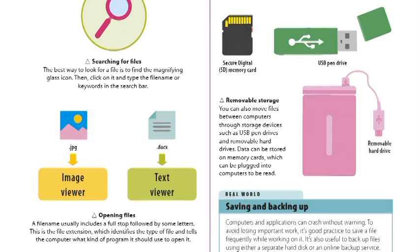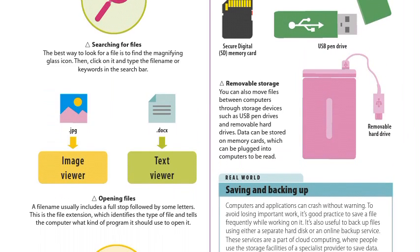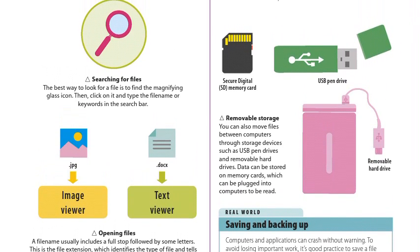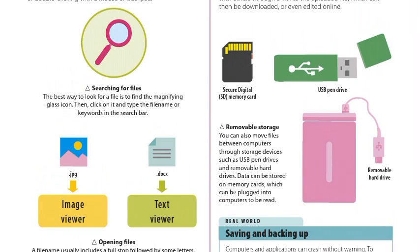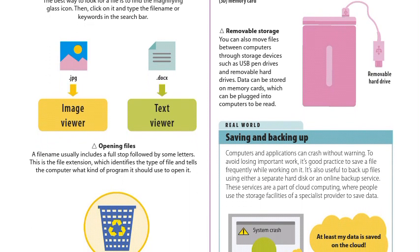The best way to look for a file is to find the magnifying glass icon, click on it, and type the file name or keyword in the search bar. You can also use an image viewer or text viewer to open files.